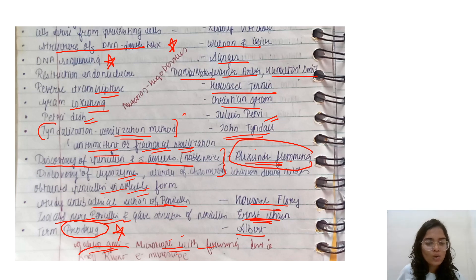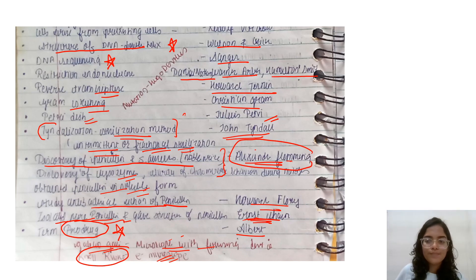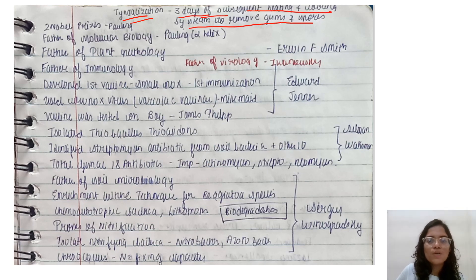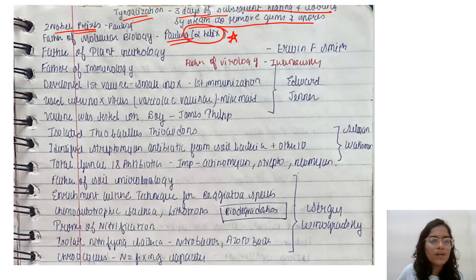Isolation of penicillin in pure form was done by Ernest Chain and Howard Florey, who studied the antibacterial activity of penicillin. The term 'prodrug' was given by Albert. Galileo used the microscope as a focusing device, and Ruska developed the electron microscope.